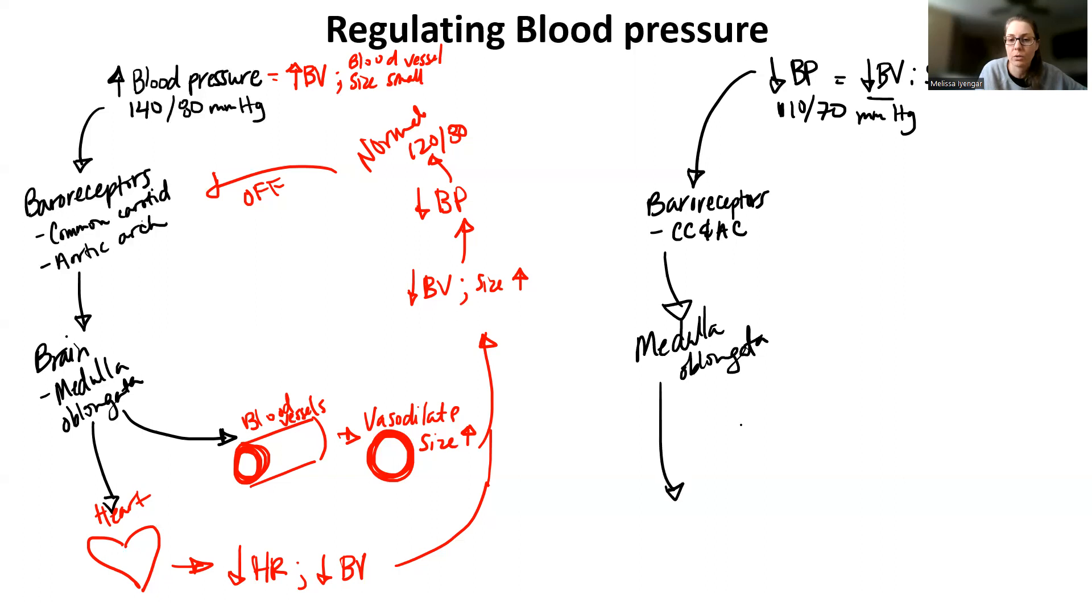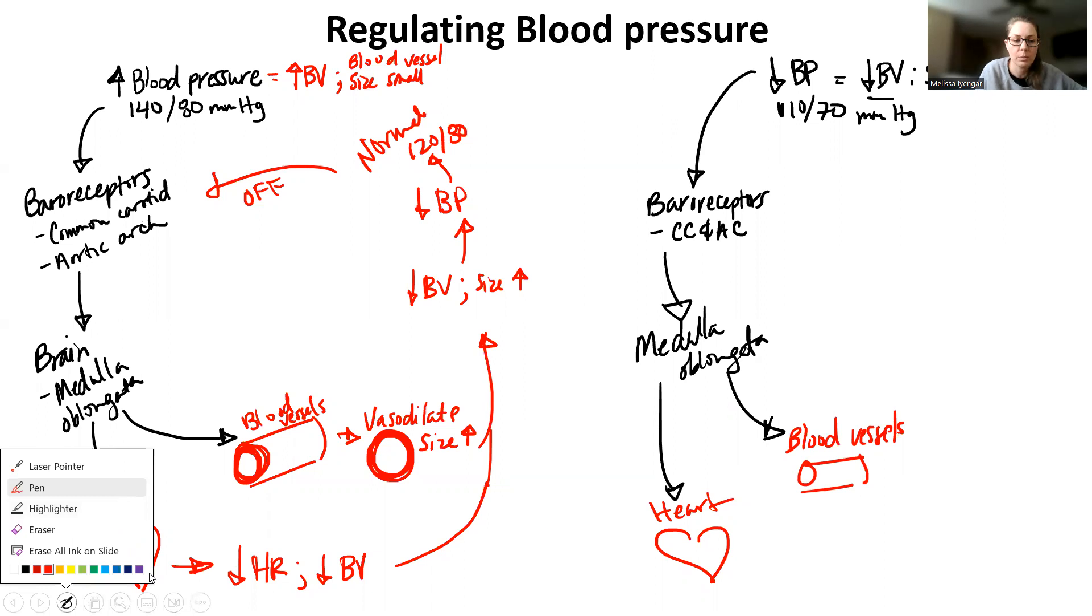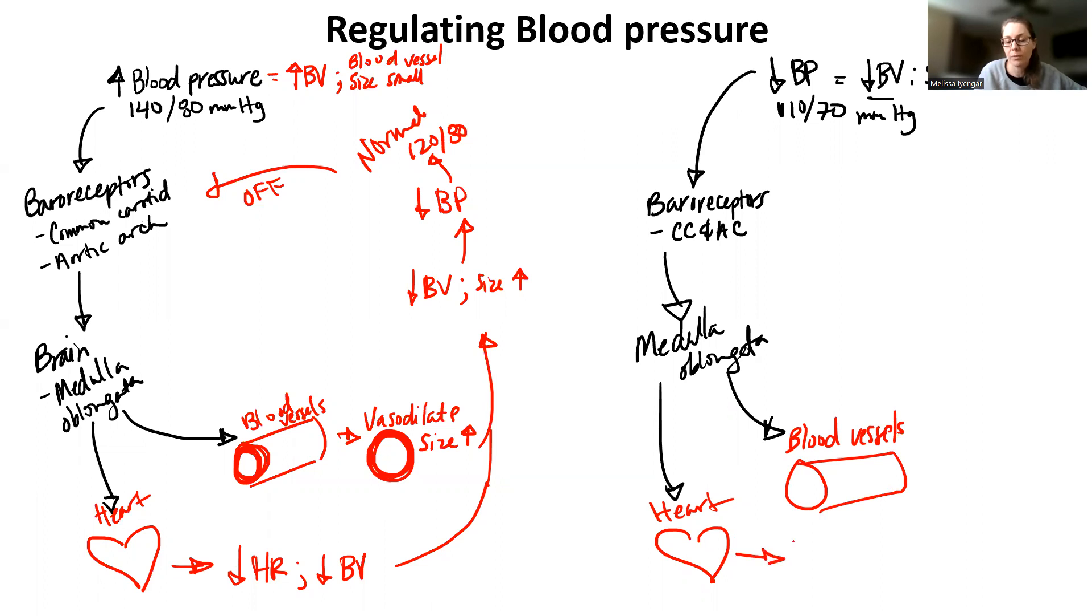Again, I got two targets that I can hit. I can hit the heart and I can hit blood vessels. One of the things that we're going to want to do is increase blood volume. So we can increase heart rate and basically blood volume increases. As I contract the heart, more blood exits, more blood ejects. Thus, blood volume should increase.